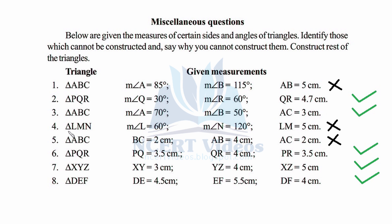For the fourth triangle, angles L and N are given, and when added they equal 180 degrees. This leaves no room for a third angle — it would have to be zero degrees — so this triangle cannot be constructed.